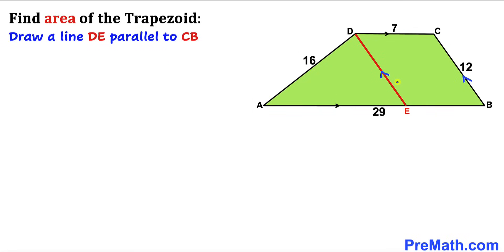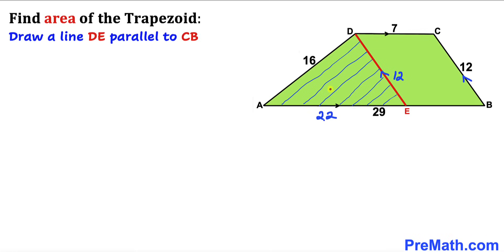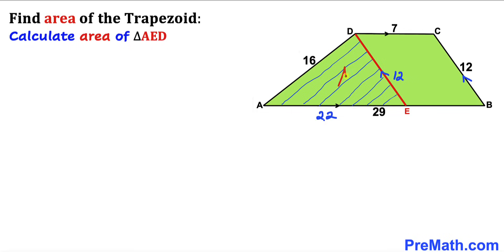I have drawn line DE that is parallel to line BC. So if this length is 12, then DE is going to be 12 units as well. Furthermore, if this length is 7 units, then BE is going to be 7 units as well. We know that the whole length AB is 29, so therefore length AE is going to be 29 minus 7, which gives us 22 units. As a result we get triangle AED whose side lengths are 22, 12 and 16 units.